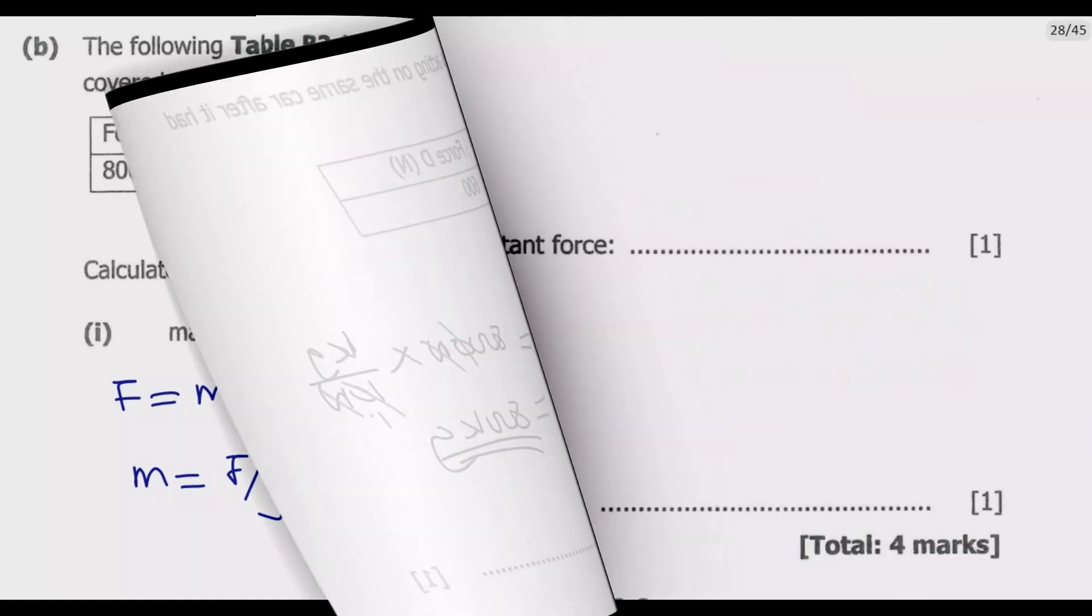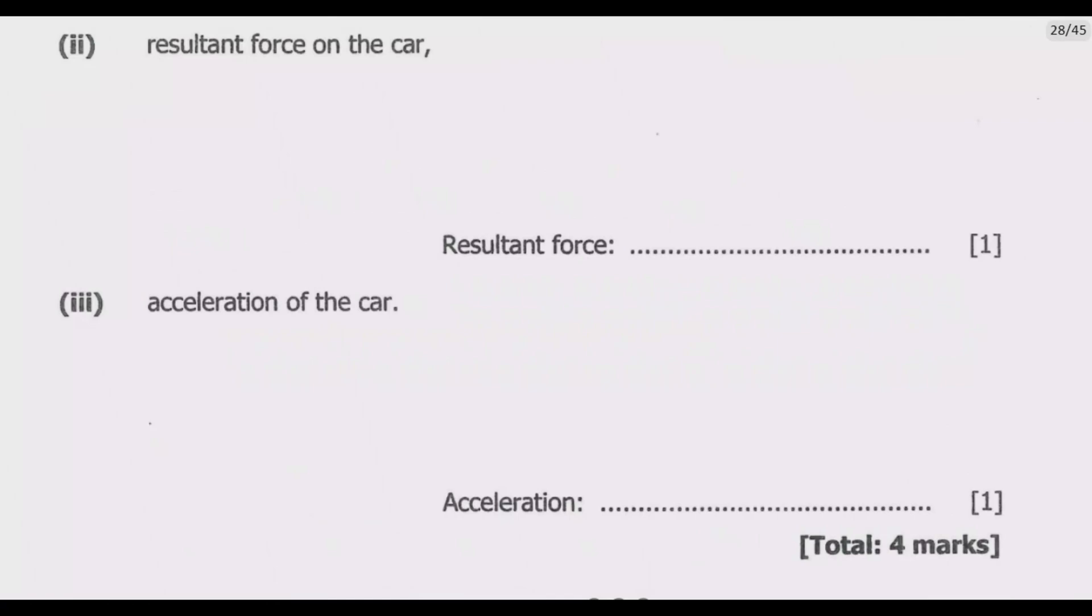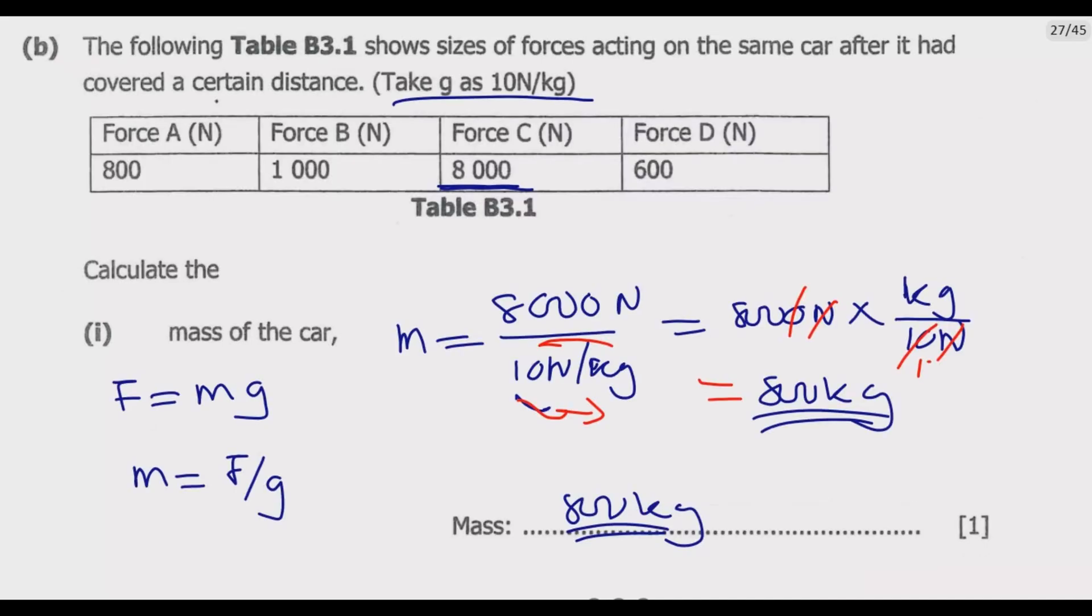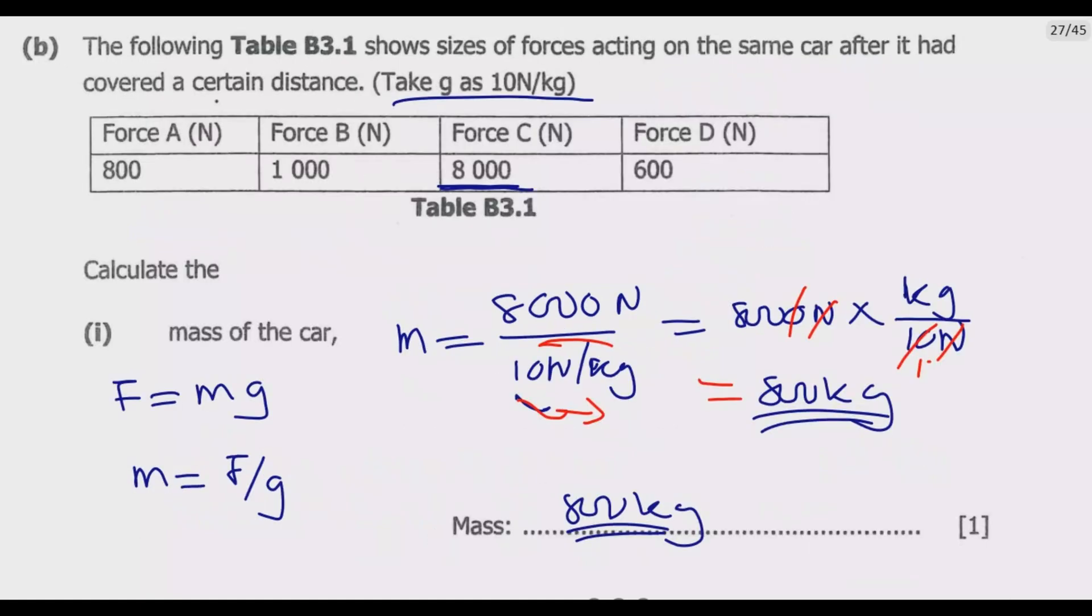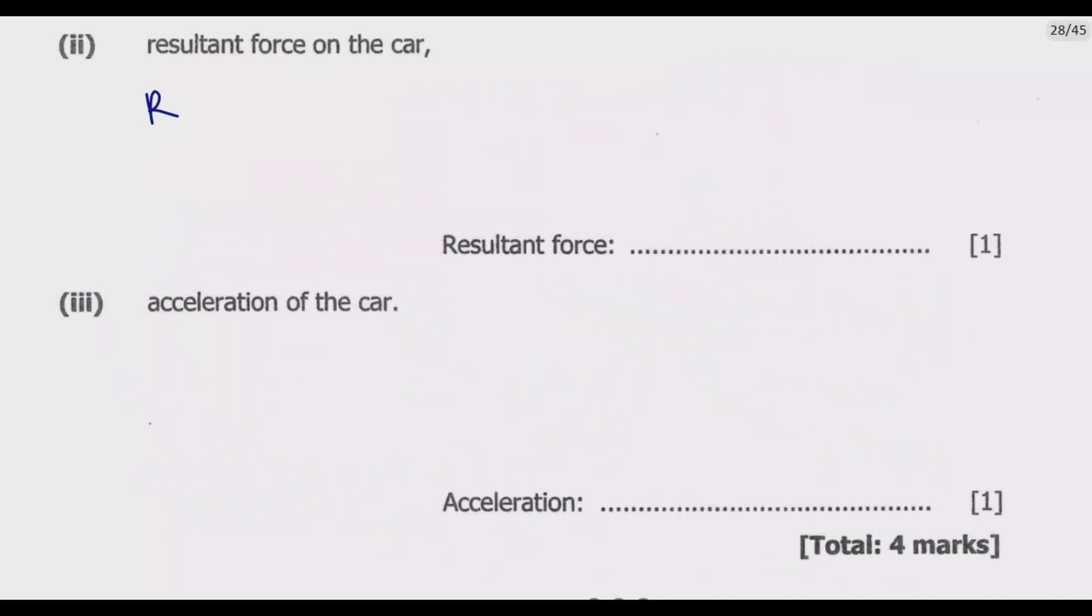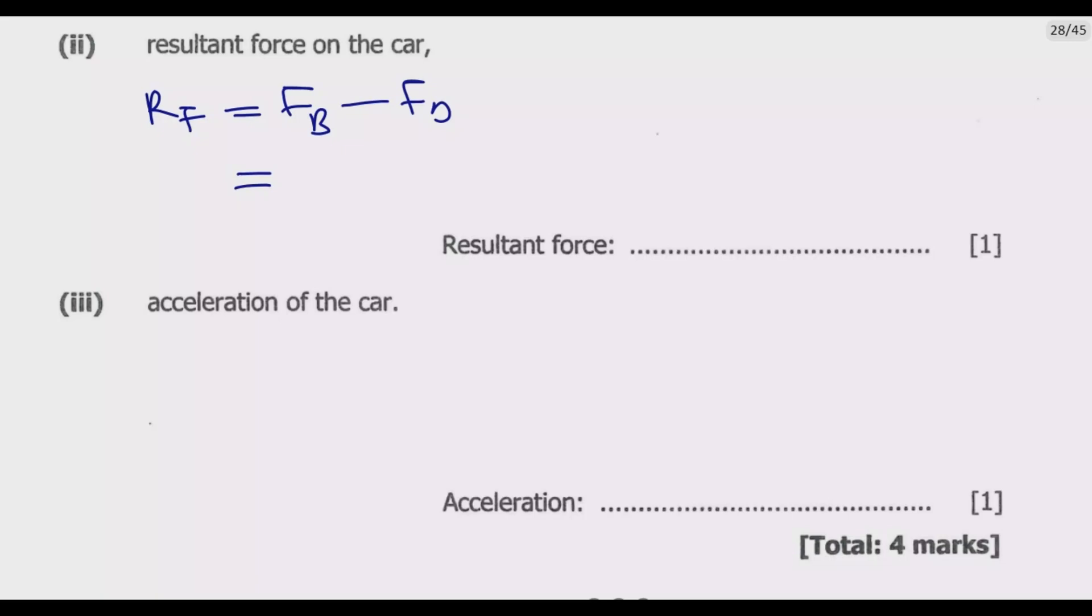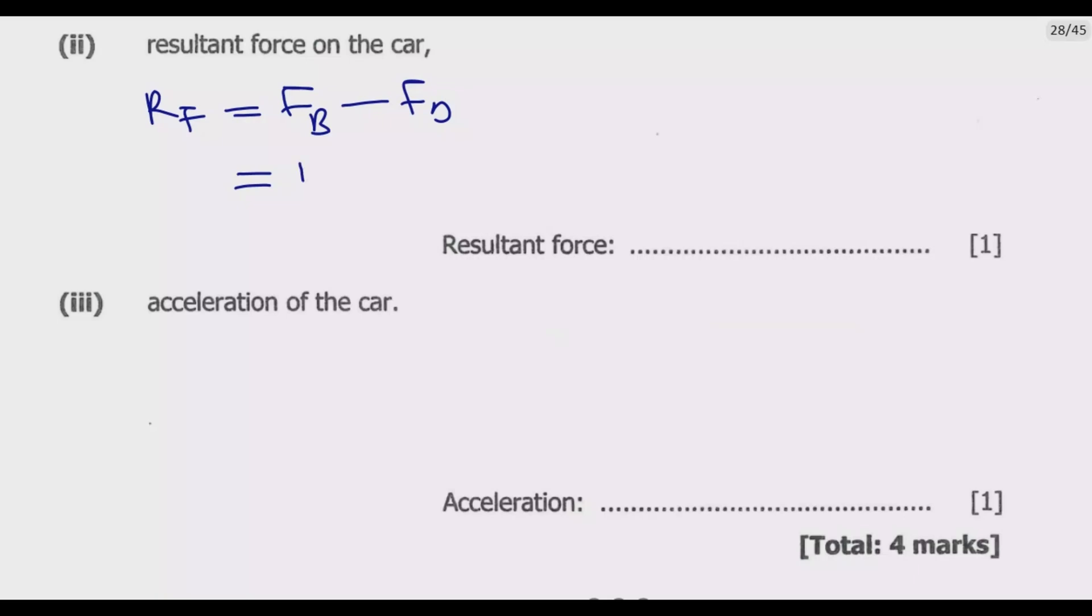Number two: resultant force on the car. We have driving force which in this case, if you notice, is B, then resistive force is D. To find the resultant force, we say resultant force equals force B, which is the driving force, minus force D, which is the resistive force. If you go to B, B is 1000, then D is 600. So you substitute: 1000 newtons minus 600 newtons. You're going to end up with 400 newtons.